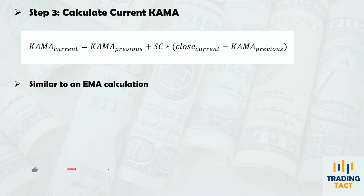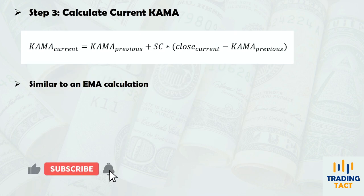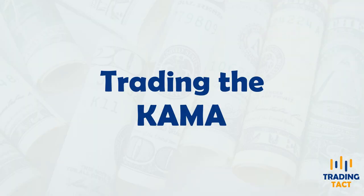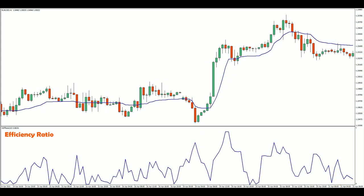Finally, like in the exponential moving average, we calculate the KAMA with this formula. Here's how the KAMA looks when overlaid on a chart. The KAMA reacts slowly in noisy sideways markets. This increases the distance between prices and the KAMA, and minimizes unwanted price penetrations caused by erratic movement.